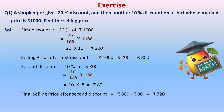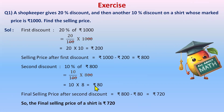Now finding the final selling price after the second discount: 800 − 80 = 720 rupees. This time 800 is our base price for the second discount. Therefore, the final selling price of the shirt is 720 rupees — that is what we pay after two successive discounts.